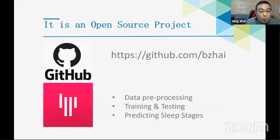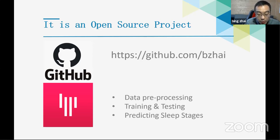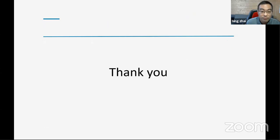This is also an open source project — you can find all the data pre-processing, feature extraction, and training and testing code on GitHub. We're also working on a web interface so anyone can run it on their local PC: once they collect HRV and activity count data, they can predict sleep stages on their own machine and get a simple, intuitive understanding of how a particular night of sleep looks.